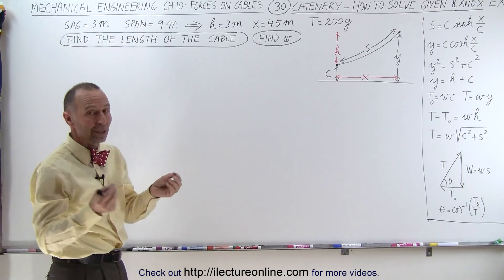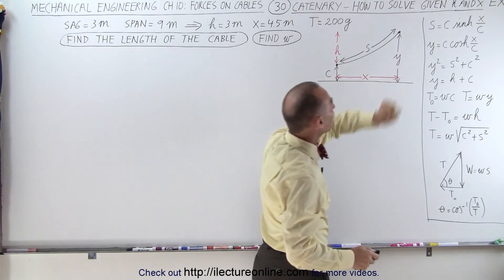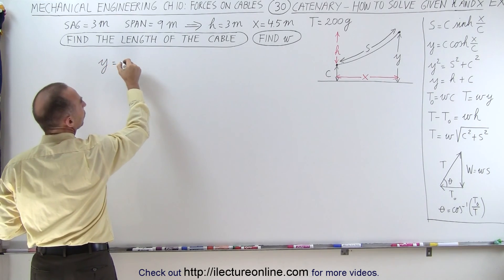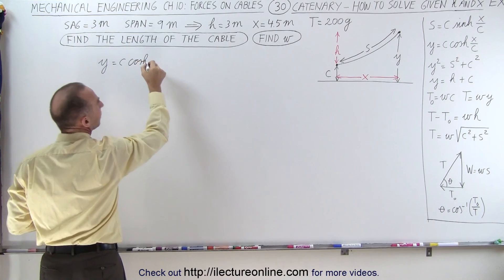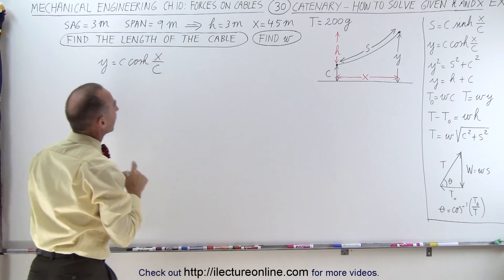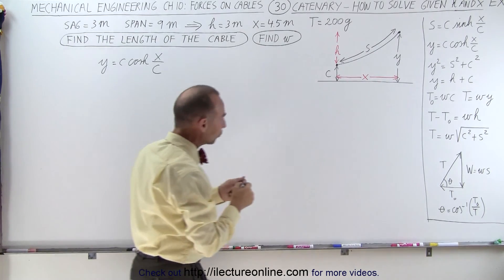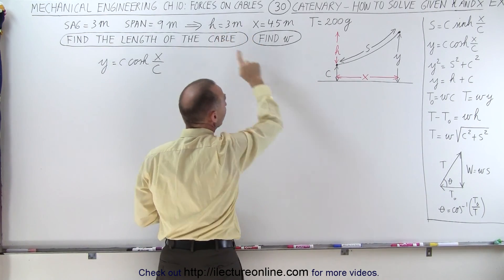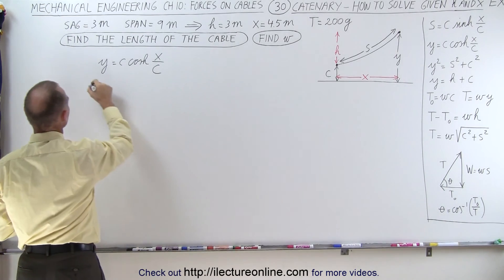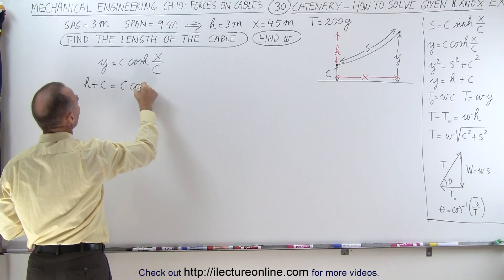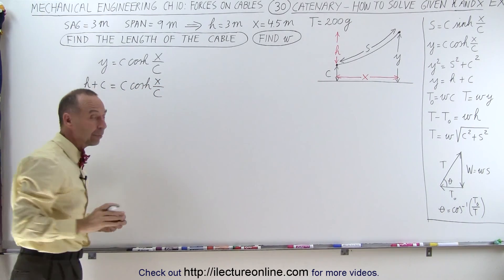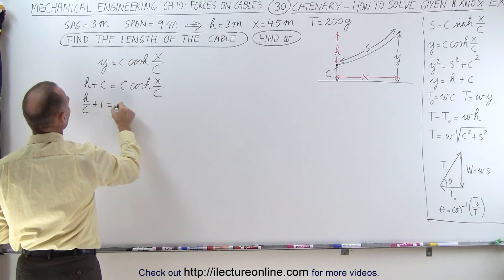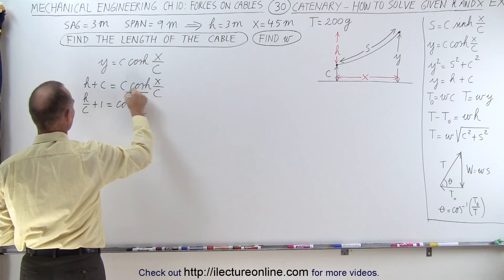We need to use the technique for when we're given H and X. We start with the equation Y equals C times the hyperbolic cosine of X over C. We substitute Y with H plus C, because we're not given Y directly — we're given X and H. So H plus C equals C times the hyperbolic cosine of X over C. Dividing both sides by C gives us H over C plus 1 equals the hyperbolic cosine of X over C.